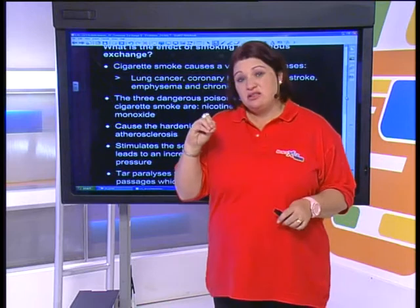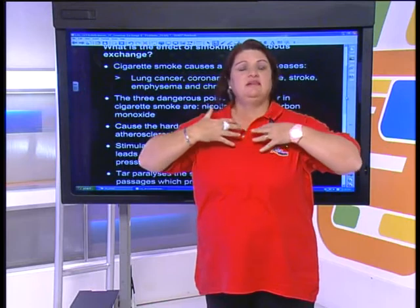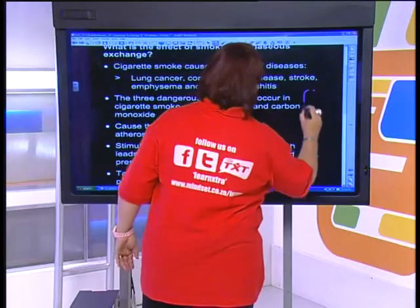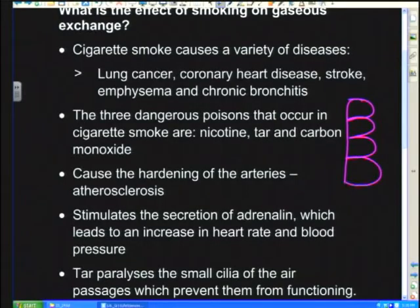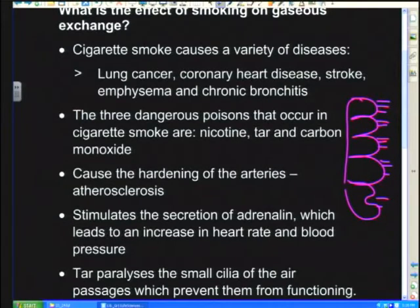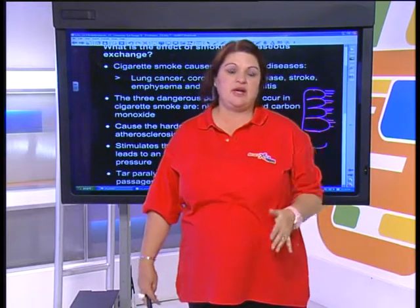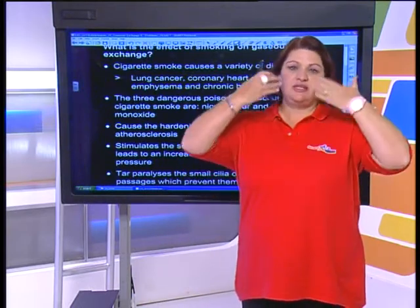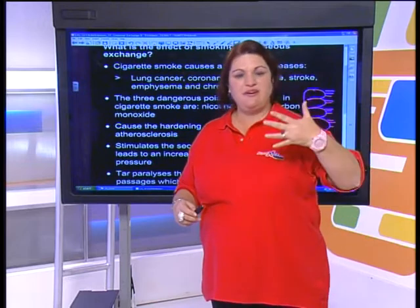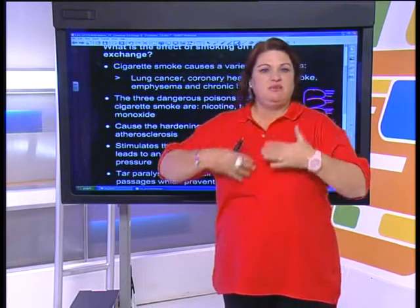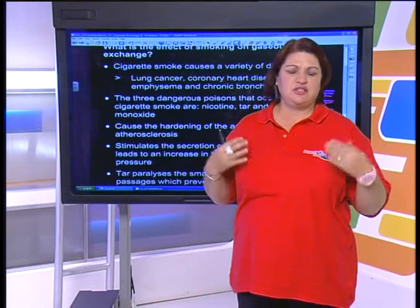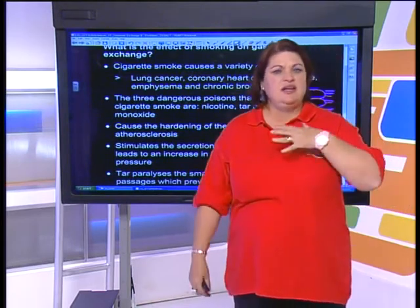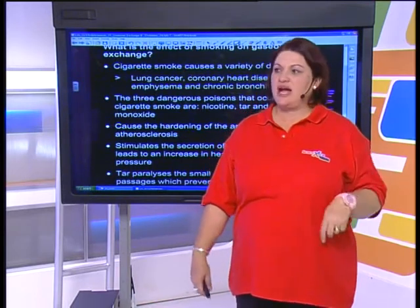The tar from cigarettes paralyzes the cilia — remember when we looked at the trachea, we had columnar epithelial cells, goblet cells, and cilia. The cilia move like a Mexican wave up and down the trachea, keeping mucus moving and maintaining a clean ventilation system. When tar paralyzes the cilia, all the yucky stuff doesn't get out properly, making smokers more prone to infections and bronchitis, especially in winter.